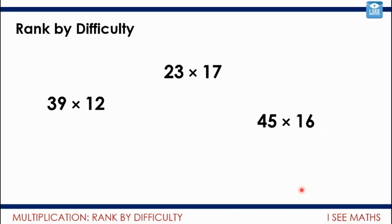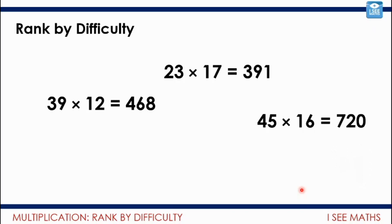Have a look at these questions. Again, just have a look at them now. How would you rank them by difficulty? Pause the video. Okay, let's have a look. There are the answers. For the example on the left, I'm going to round the 39 to 40, do 40 multiplied by 12, and then subtract 12 to get 480. Then 23 times 17 — I actually found that one more difficult to use any of those strategies for, so I'd classify that as the hardest. Whereas 45 multiplied by 16 — I just doubled the 45 to get 90, halved the 16 to get 8, and 90 times 8 gave me essentially one calculation. So that one I found the easiest.